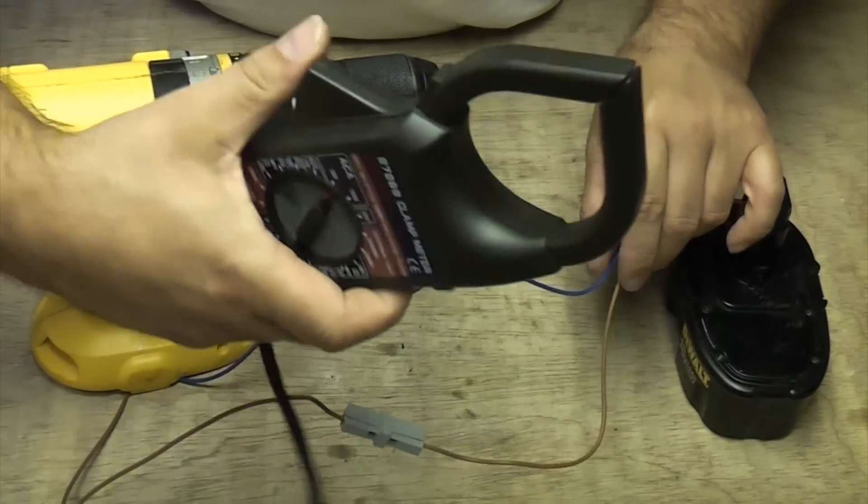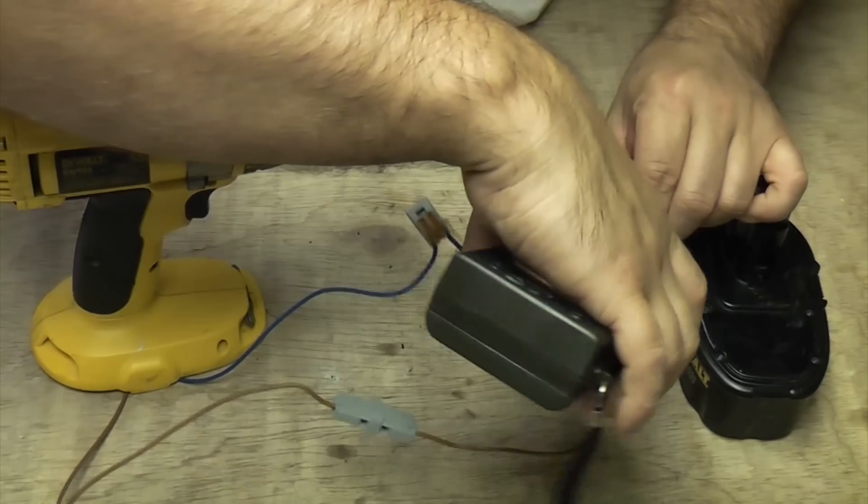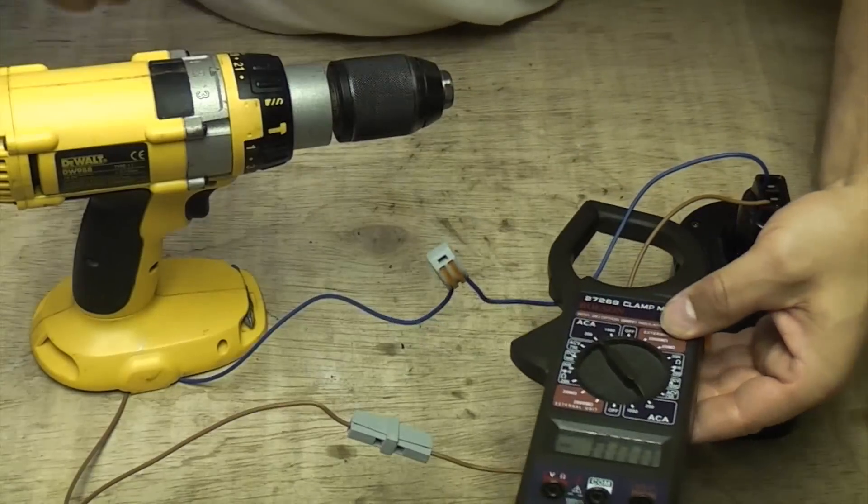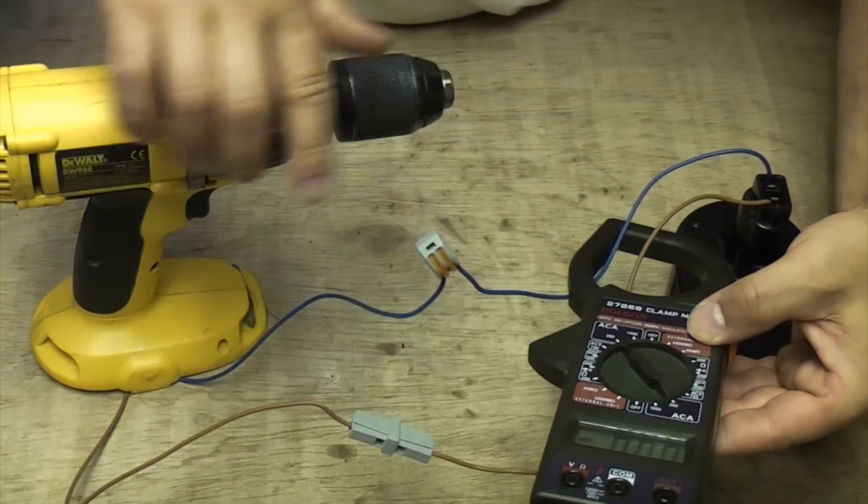So one thing you should never do is try and measure both of the wires at once because that just won't work - they'll just cancel each other out.